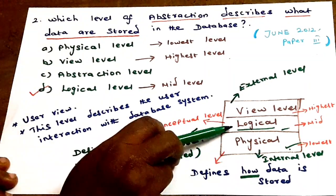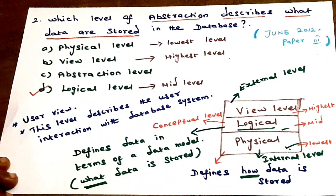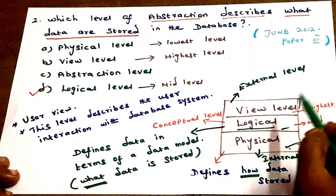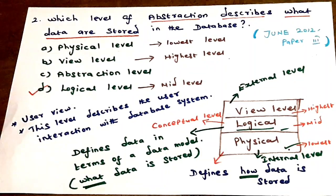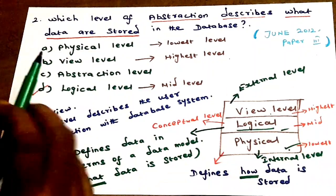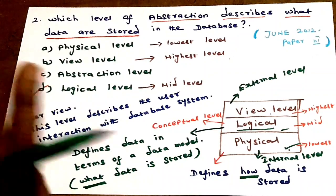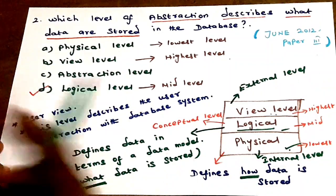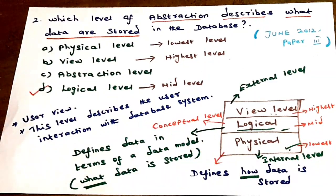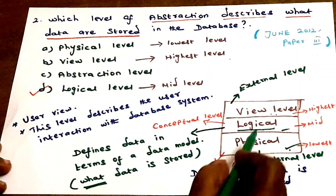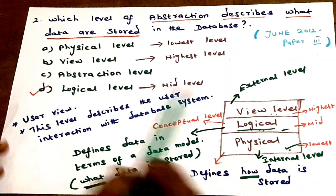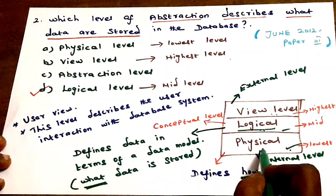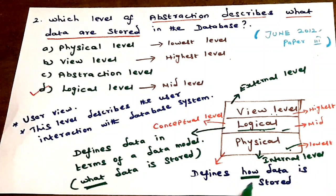There are three levels total. The lowest level is physical level, the middle level is logical level, and the highest level is view level. View level is closer to the user and is also called external level. Logical level is also called conceptual level — it describes what is stored in the database. Physical level is closer to the system and the database, and is also called internal level.